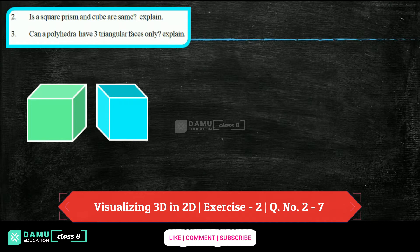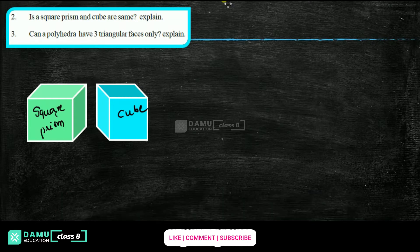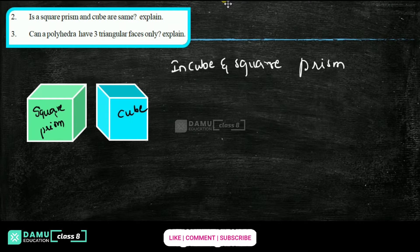This is a square prism. A prism is one where the opposite sides are parallel to each other and have the same dimensions. It is a square prism because all the sides are equal. In a cube, all the faces are also the same. So in both a cube and a square prism, the sides are equal.